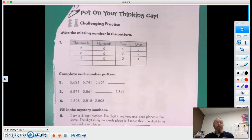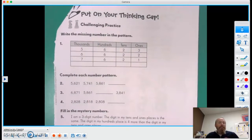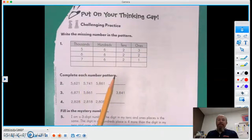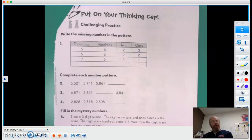All right, good morning boys and girls. Today we're going to work on the Put On Your Thinking Cap challenging practice. Write the missing number in the pattern: 5623, 6622, 7621. Kind of hard to see a pattern that way, isn't it? Well, let's try this. It's a little different, but let's try this.